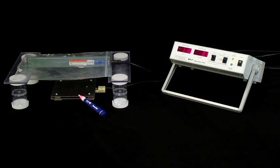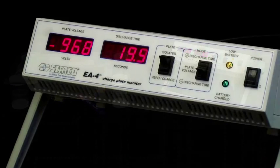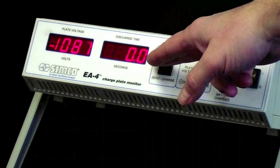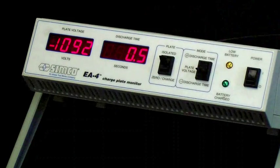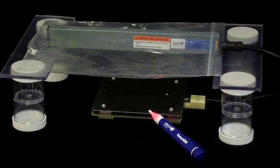This time, the static bar is placed in a bag at the same relative distance to the CPM plate and voltage detector. The plate is charged to 1000 volts again. Now watch as the bar is powered on.